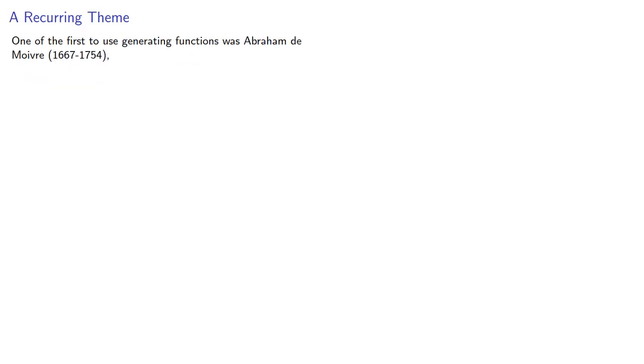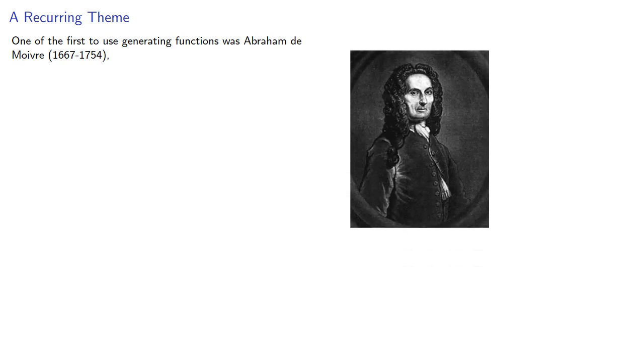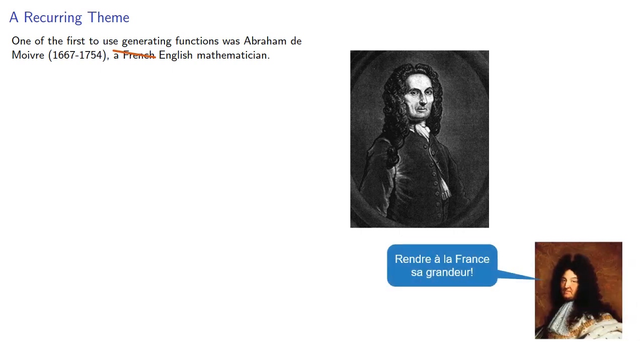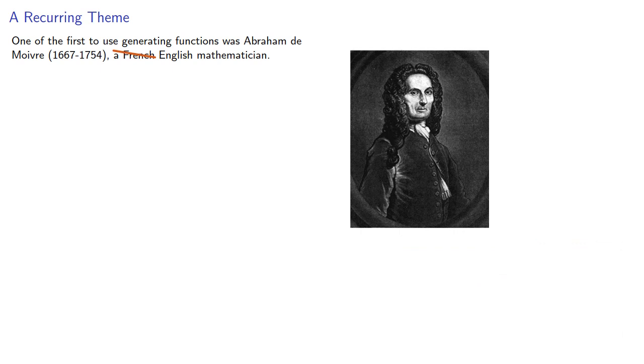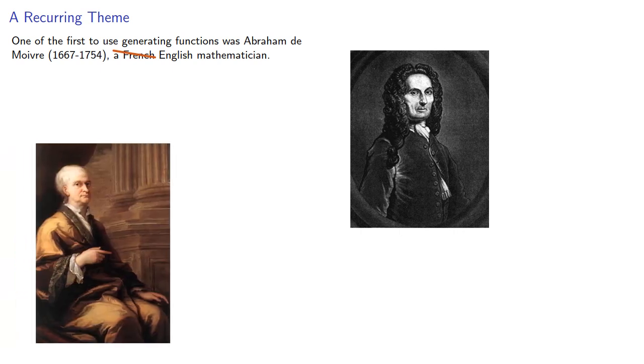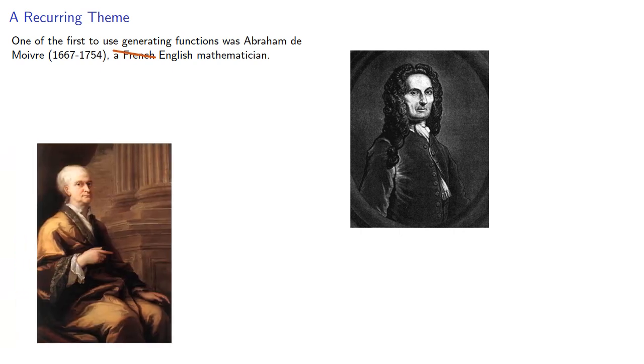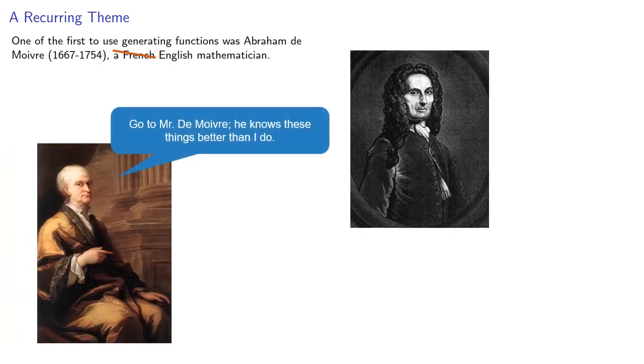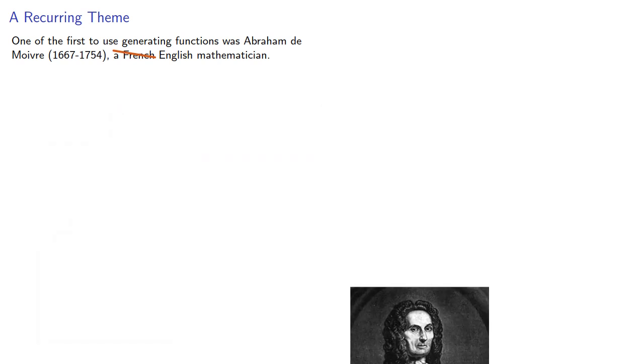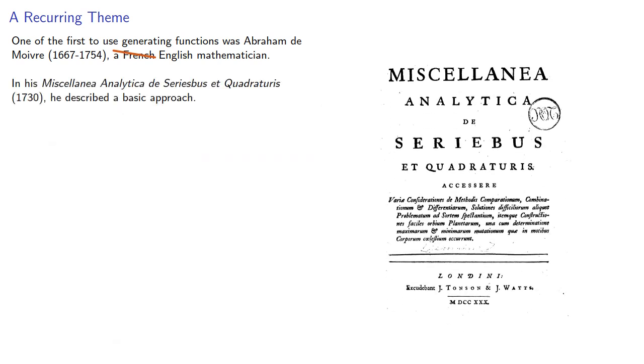One of the first to use generating functions was Abraham de Moivre, a French, well actually an English mathematician. Political persecution by the King of France caused de Moivre and thousands of others to flee the country. De Moivre ended up in England. In his new country, de Moivre became so prominent that in his later years Newton said to aspiring mathematicians, go to Mr. de Moivre, he knows these things better than I do. In his work, he described a basic approach.